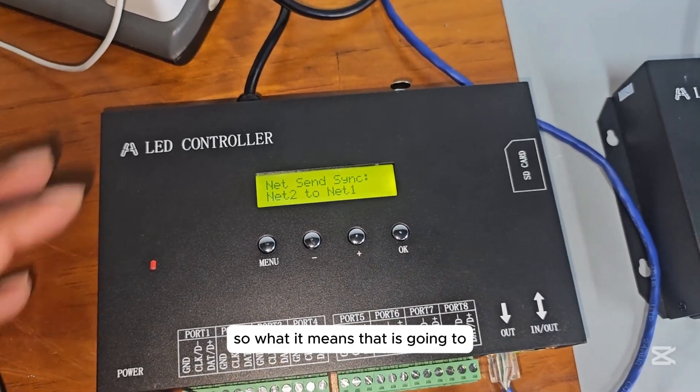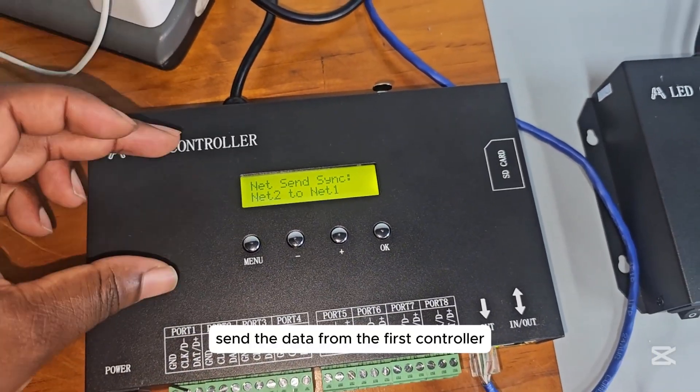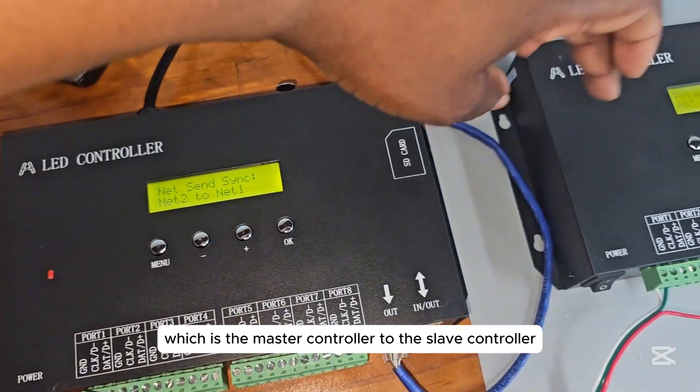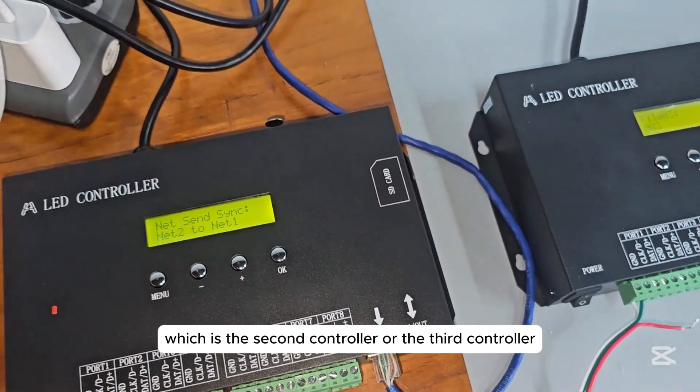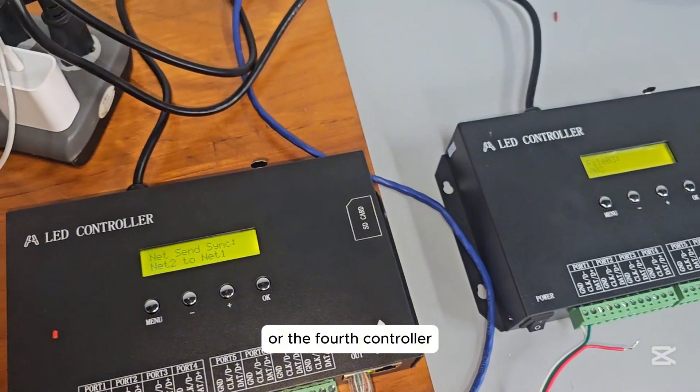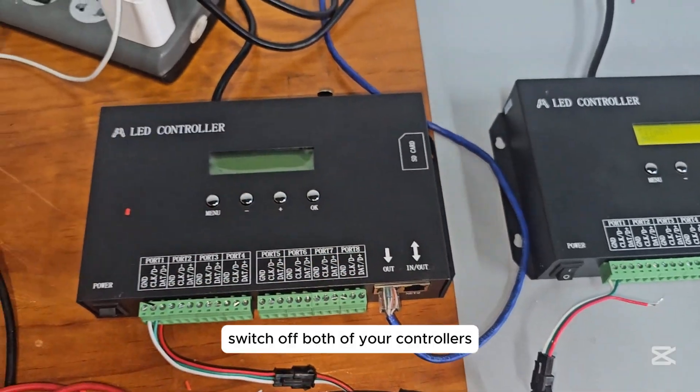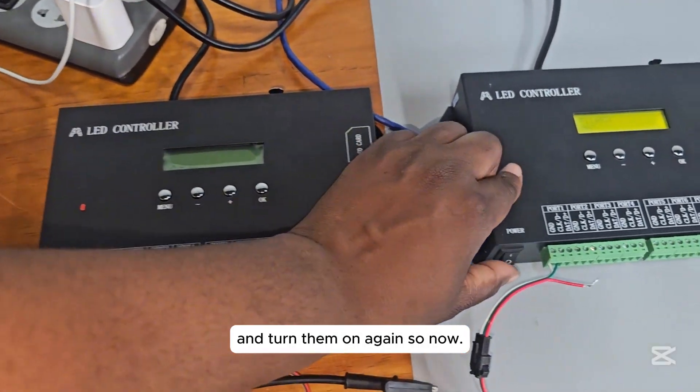So what it means is that it's going to send the data from the first controller, which is the master controller, to the slave controller, which is the second controller or the third controller or the fourth controller. After doing the settings, switch off both of your controllers and turn them on again.